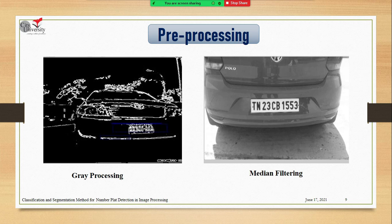Now I'm going to talk about pre-processing. Pre-processing must be done after acquisition of images. When an image is acquired, there may be noise present in these images, and this noise affects the recognition rate greatly, so it must be removed by taking different types of processes. The first process is gray processing — the conversion of color images into gray images. This method is based on different color transforms according to RGB in the images, and it calculates the gray values to obtain the gray images.